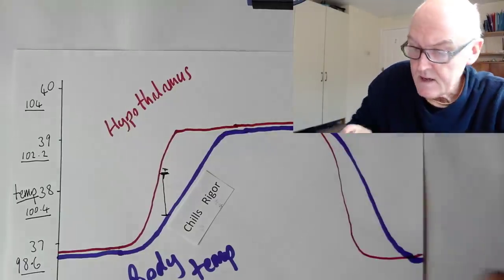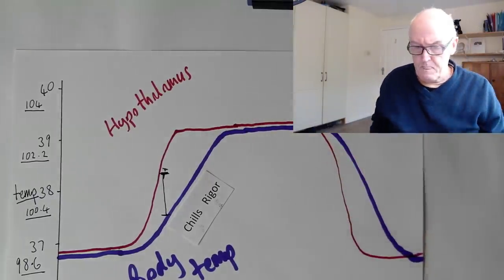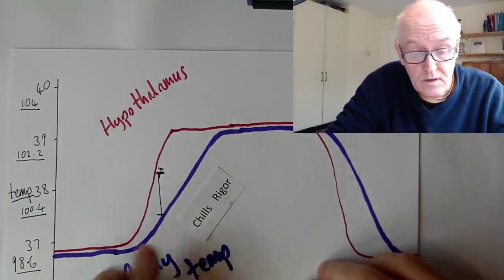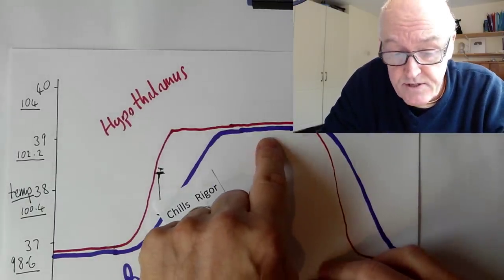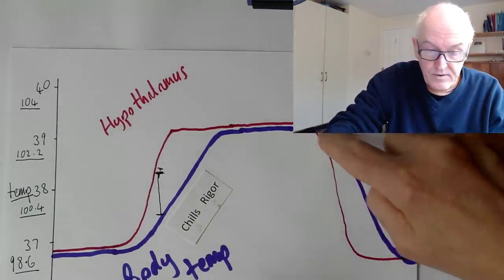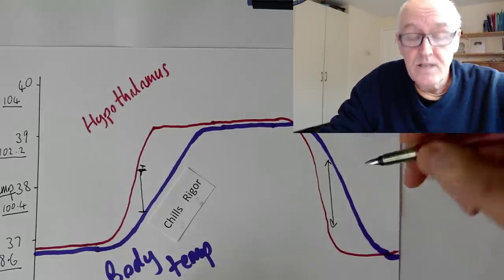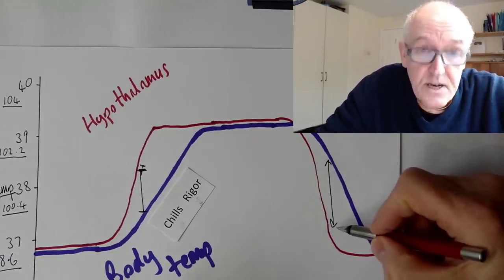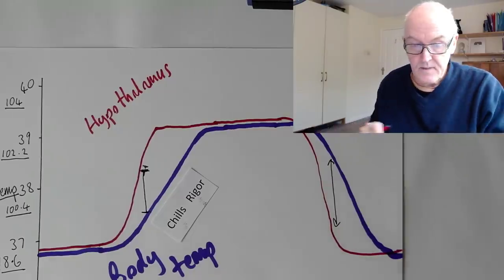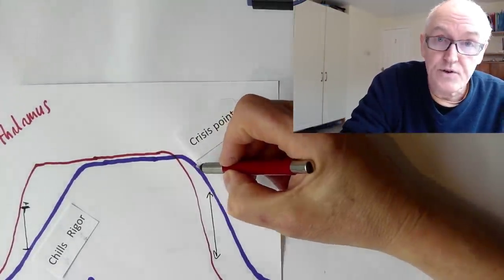Your body temperature is going up and you feel cold, so you pile on the blankets. Then your body temperature goes up and stays hot. When you're at this rising phase you feel cold. When the body temperature matches the hypothalamus set point, you don't feel hot or cold. But when the temperature is on the way down, the temperature of the hypothalamus is lower than the body temperature, so the body is trying to cool you down — here you can feel hot. So when the fever's going down, you can feel hot. And this point here where the fever first starts to abate — that's called the crisis point.